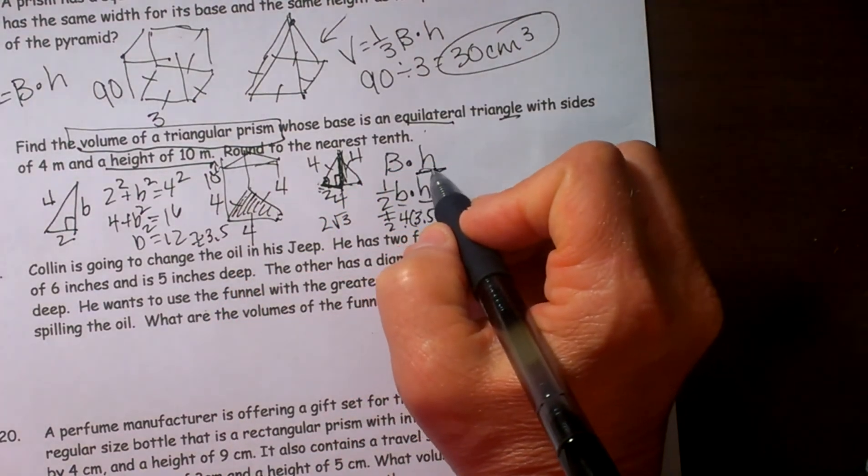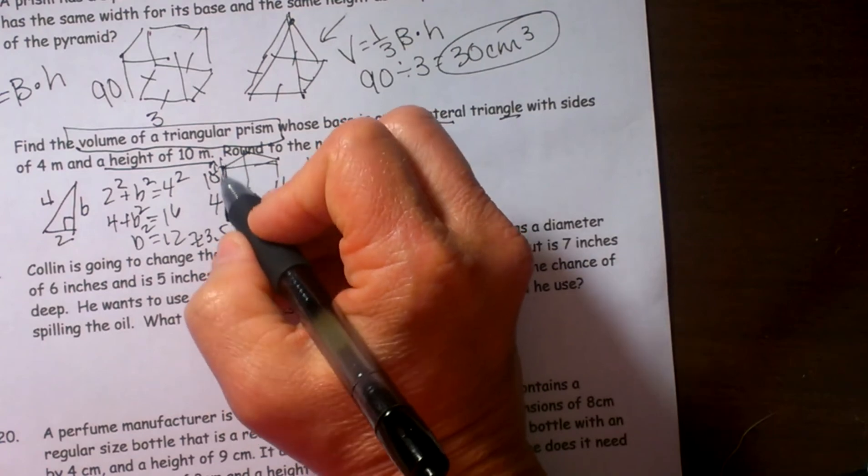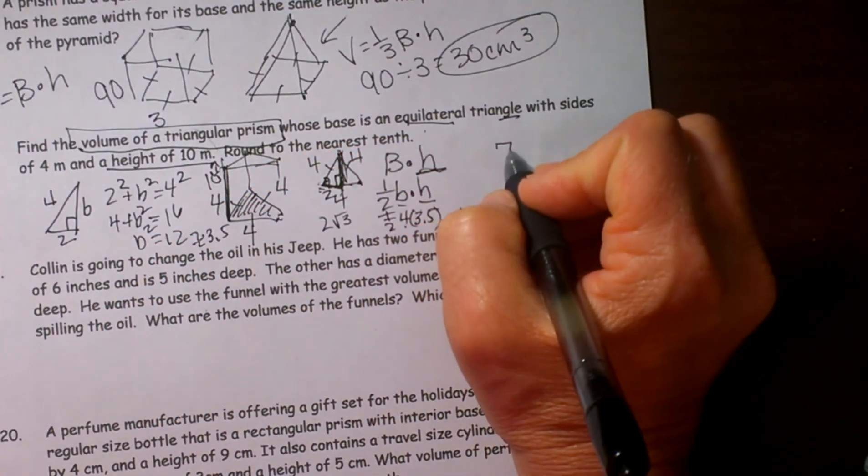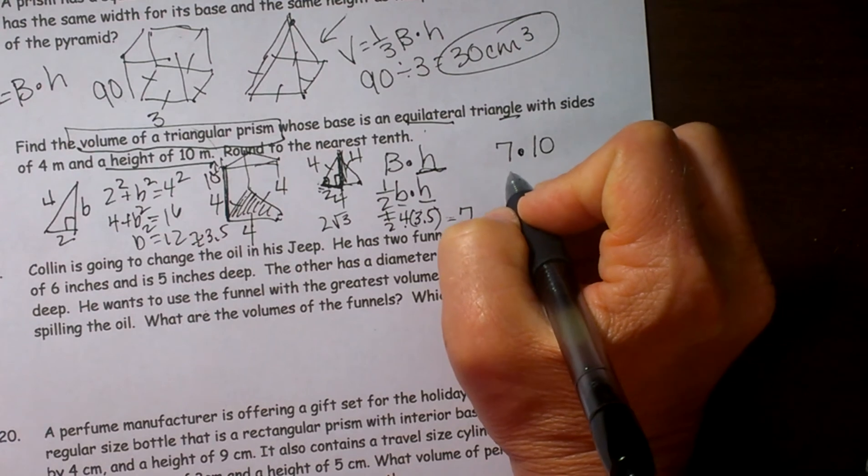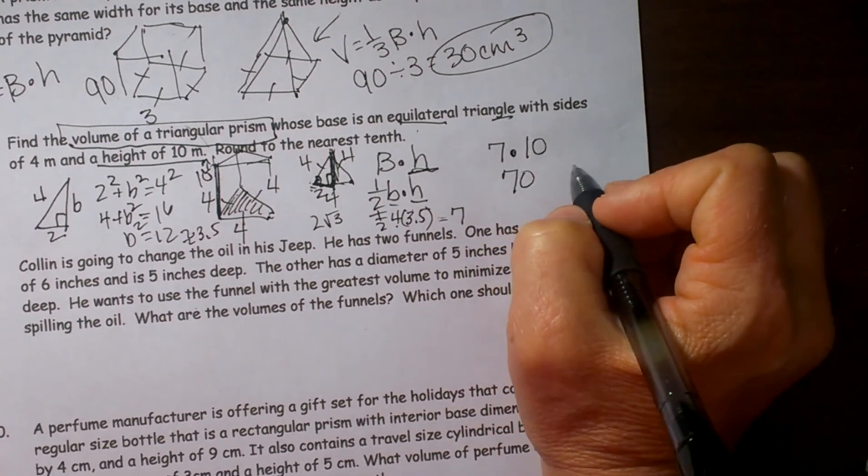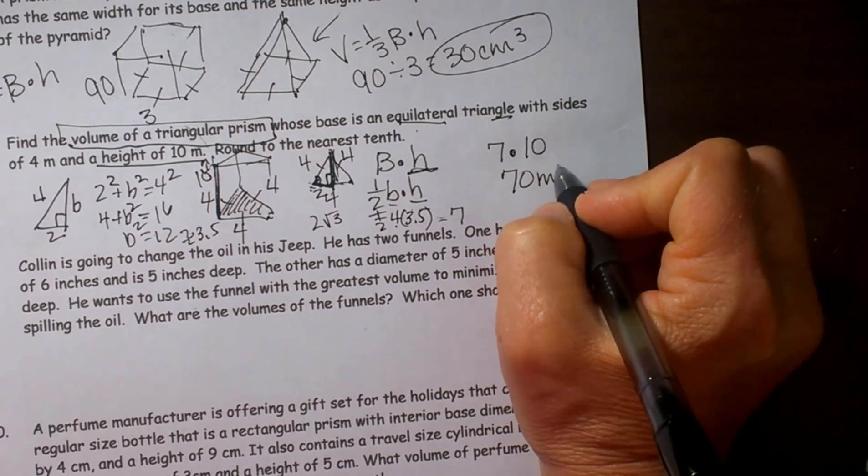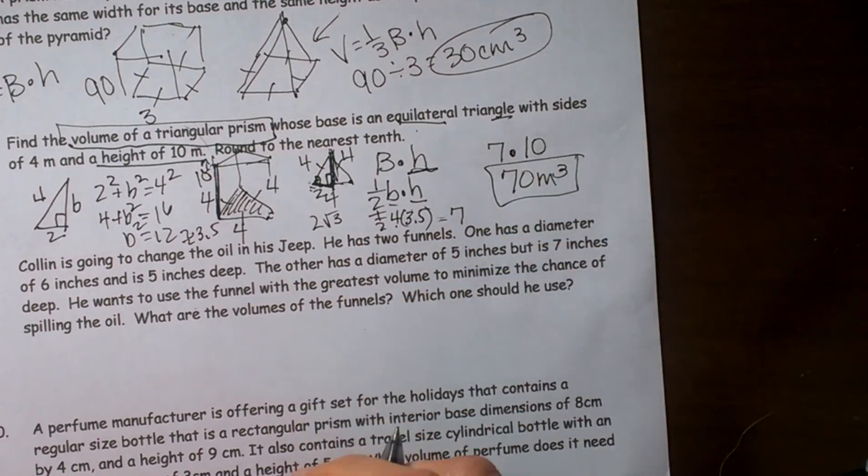Now we are just going to take it times the height of the pyramid. Remember the height was 10. So base area of 7, height of 10, that means the volume is 70 meters cubed, and there is our answer.